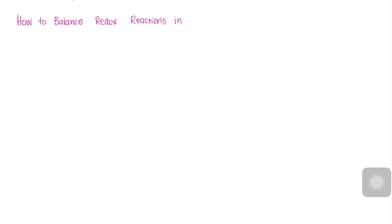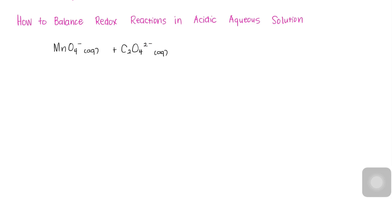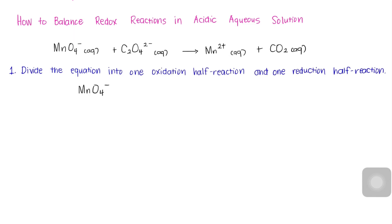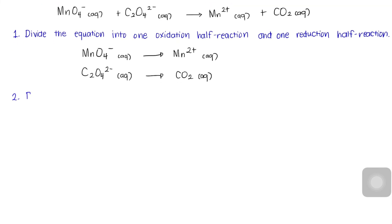Now let us have a more complicated example of how to balance redox reactions. We will consider redox reactions in acidic aqueous solutions — specifically the reaction between the permanganate ion and oxalate ion in acidic aqueous solution. When permanganate ion reacts with an acidified solution of oxalate, the deep purple color of the permanganate ion fades, bubbles of carbon dioxide gas form, and the solution takes on the pale pink color of manganese 2+. To complete and balance this redox equation, we must first write the two half-reactions: the permanganate ion being reduced to manganese 2+, and the oxalate ion being oxidized to carbon dioxide gas.